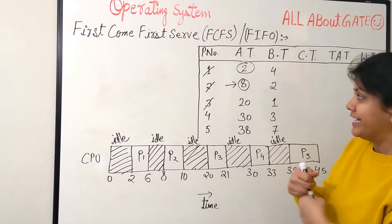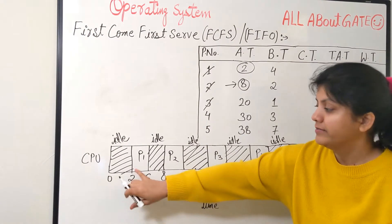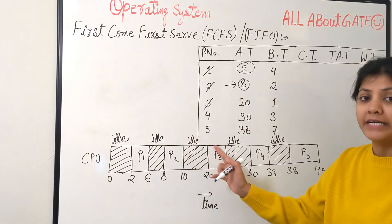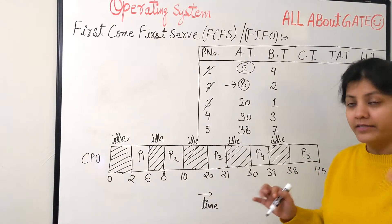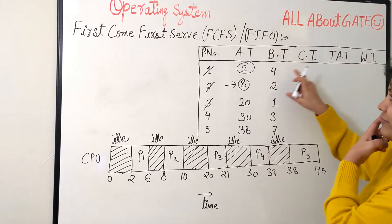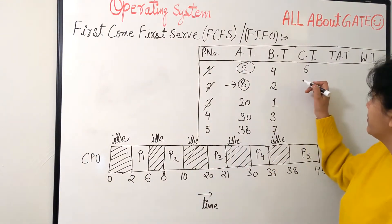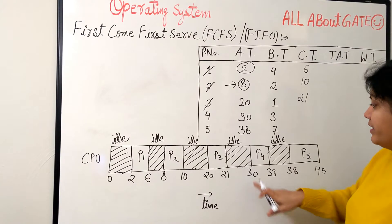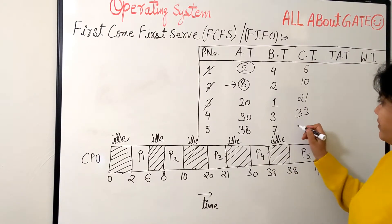The completion time for each process, that's nothing but the time it's finishing because it's non-preemptive. None of the process is getting multiple chances. Each process comes and finishes and terminates. So completion time for process 1 is nothing but 6. Process 2: 10. Process 3: 21. Process 4: 33. Process 5: 45.